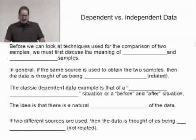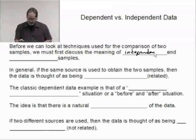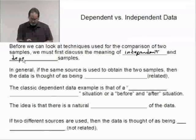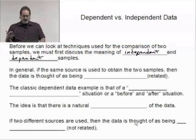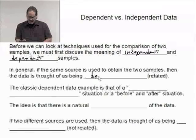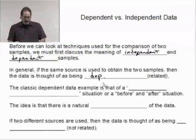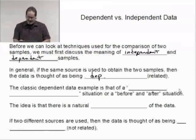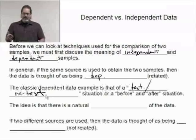Before we can look at techniques used for the comparison of two samples, we must first discuss the meaning of independent and dependent samples. In general, if the same source is used to obtain the two samples, then the data is thought of as being dependent. It's related. There's a connection between the data.